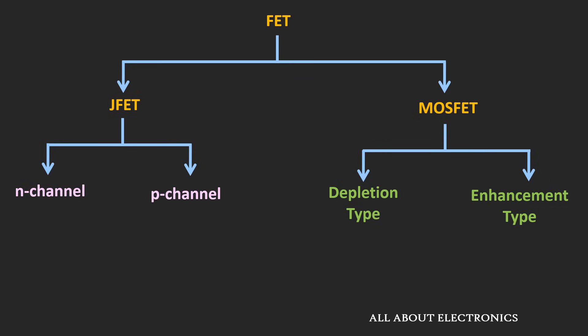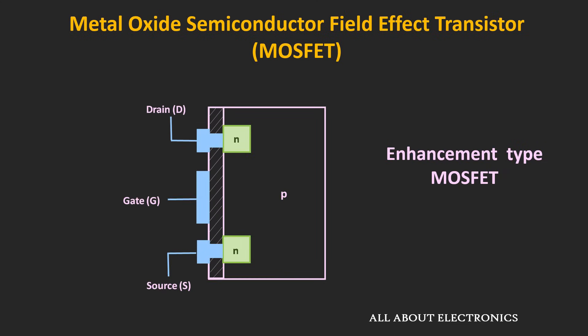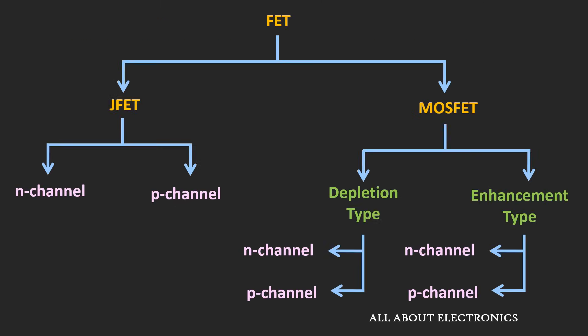The MOSFET can be further classified into two types: the depletion type and the enhancement type. When we apply a voltage at the gate terminal, due to the electric field it can either deplete or enhance the number of charge carriers in the channel. If the number of charge carriers gets depleted, it is known as the depletion type MOSFET; if the number of charge carriers increases, it is known as the enhancement type MOSFET. The enhancement type MOSFET forms the channel between two N-regions whenever voltage is applied at the gate terminal. Both types can be further classified as N-channel or P-channel MOSFETs.